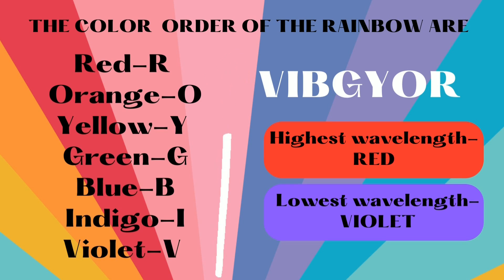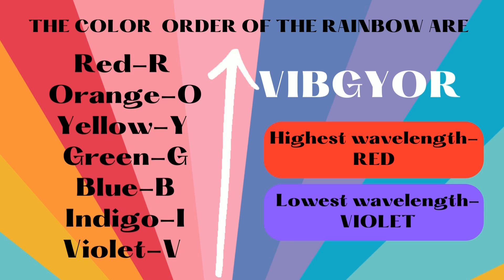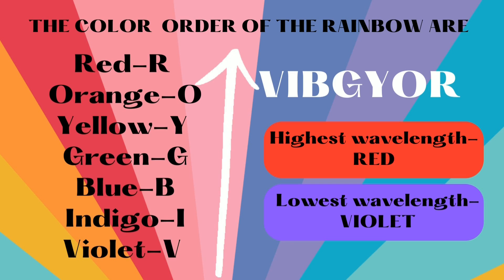These colors appear in a specific order because they have different wavelengths. Red light has the longest wavelength, followed by orange, yellow, green, blue, indigo, and violet, which has the shortest wavelength.